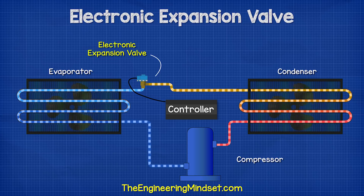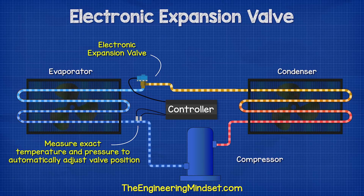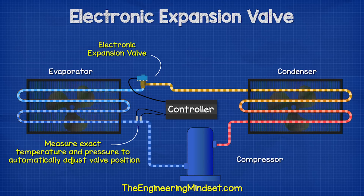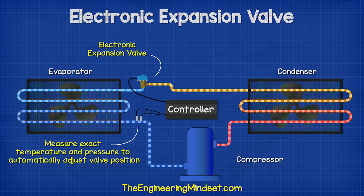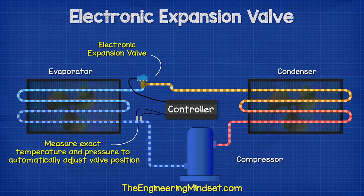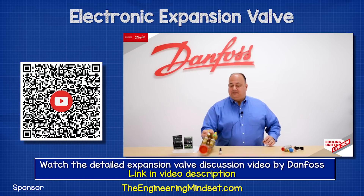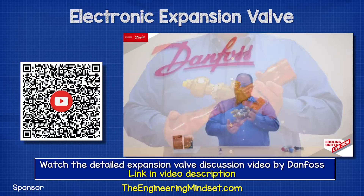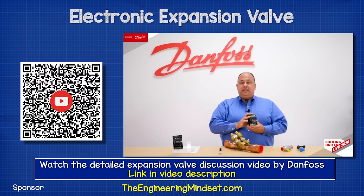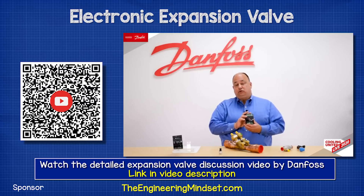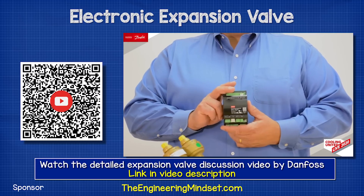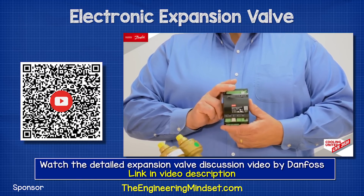The latest evolution is to use electronic expansion valves. These use a controller to measure the exact temperature and pressure and adjust the valve position automatically in real time to ensure optimal performance and maximum system efficiency. This model is based on the ETS-5M which is produced by Danfoss, who have kindly sponsored this video. They have also made a detailed video discussing the different types and uses of electronic expansion valves hosted by their expert Victor — there's some very good information discussed there, and I'll leave a link in the video description down below.